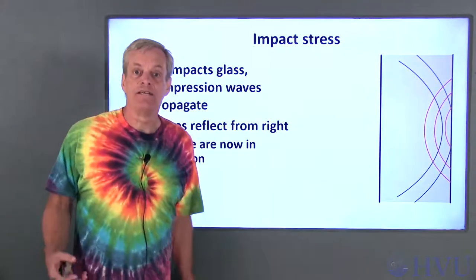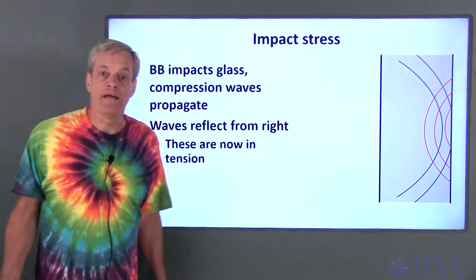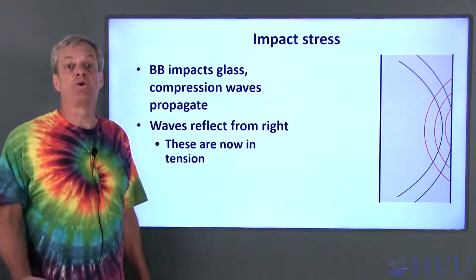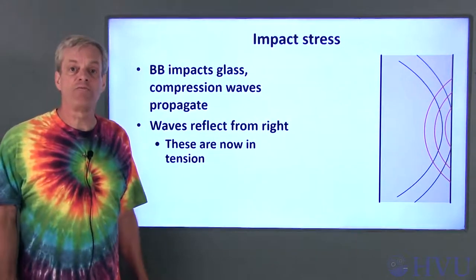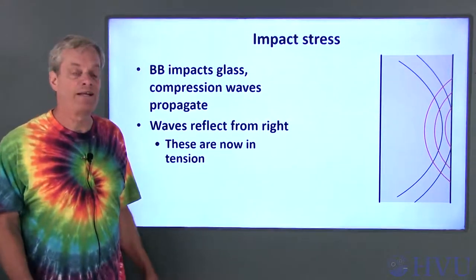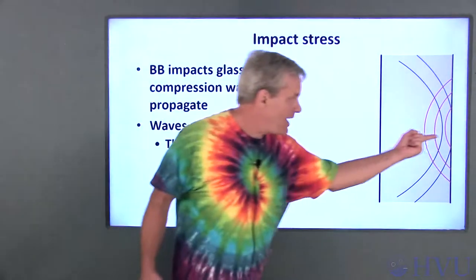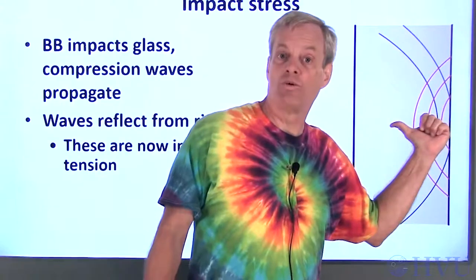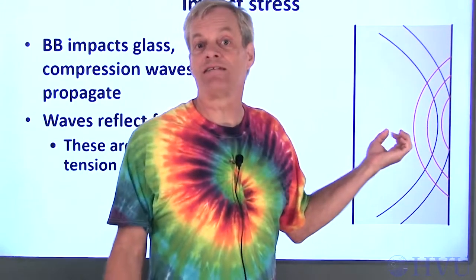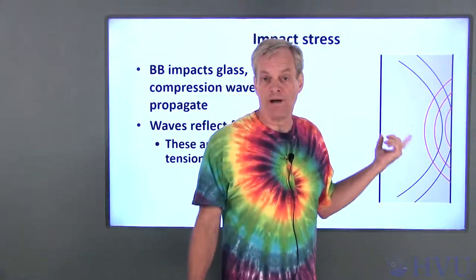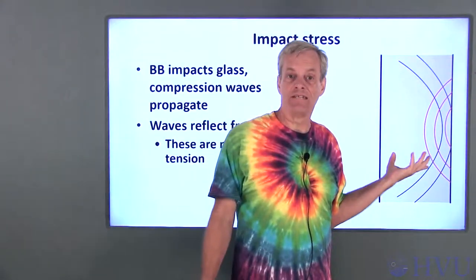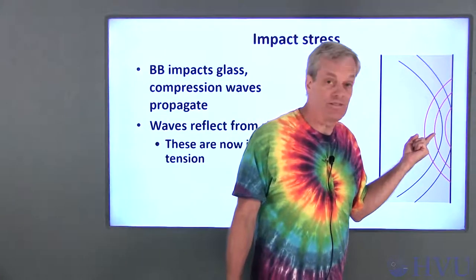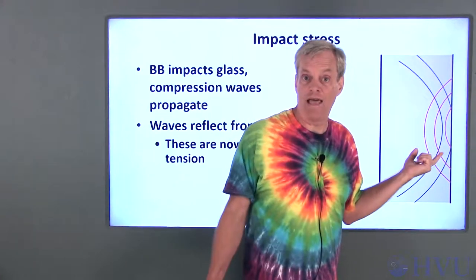The right side of the glass isn't supported by anything, and the stress there is zero. So when the compressive wave hits the right side of the glass, it's reflected as a tensile wave, which tends to pull the glass apart. The combined effect of the tensile and compressive waves is that they cancel out when they overlap.